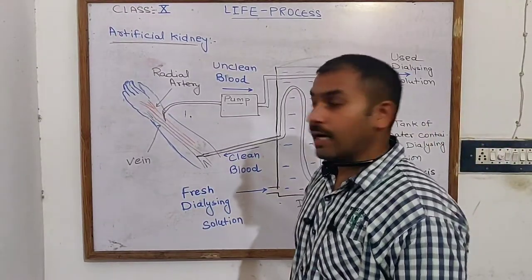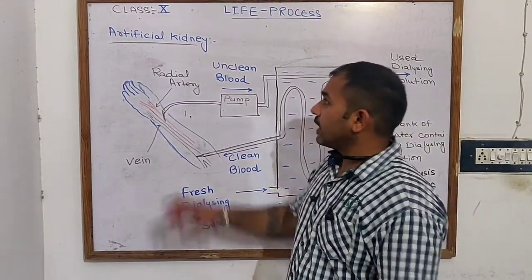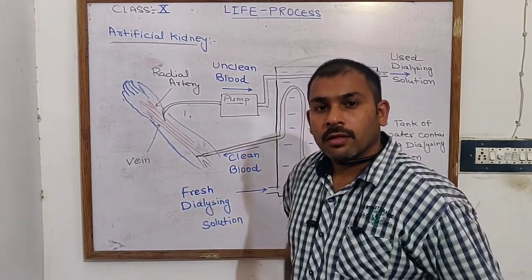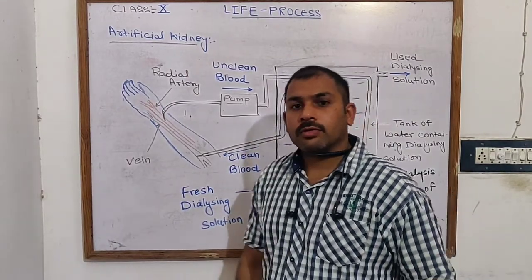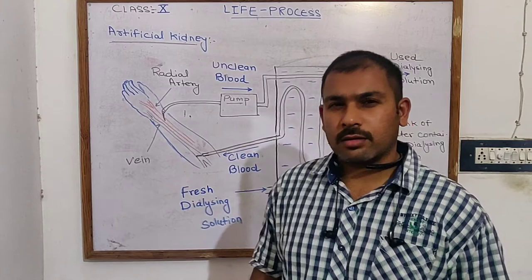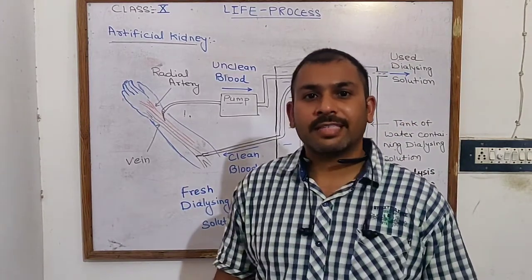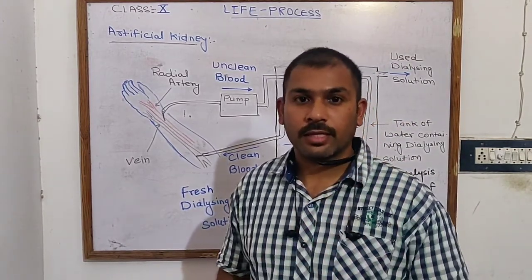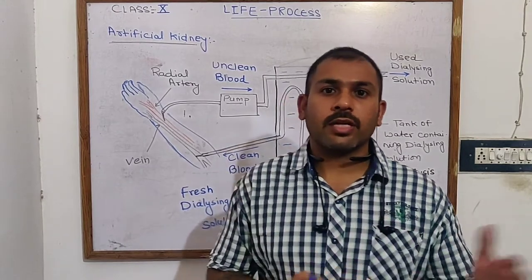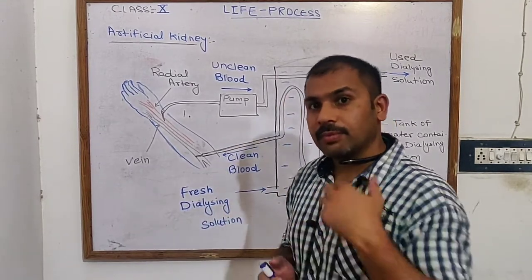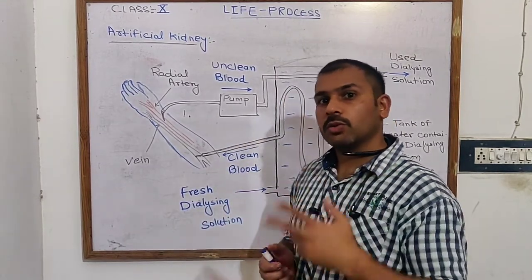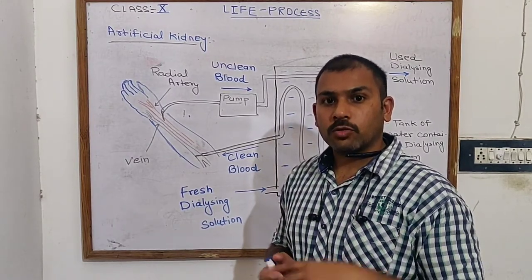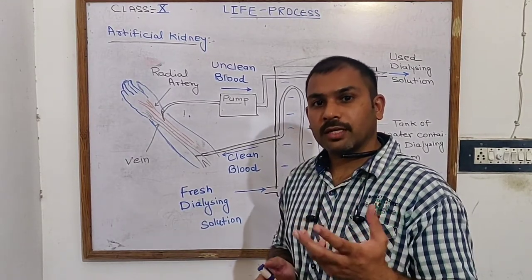Now we will study the artificial kidney. Why is the artificial kidney required? When one kidney of a person is damaged, he can still work with the other kidney. But if both kidneys are damaged, then there is no option to filter the blood.